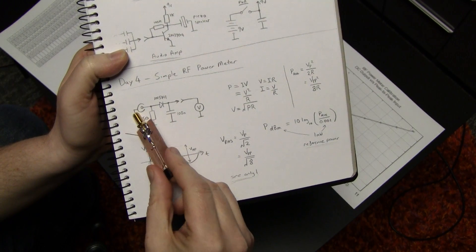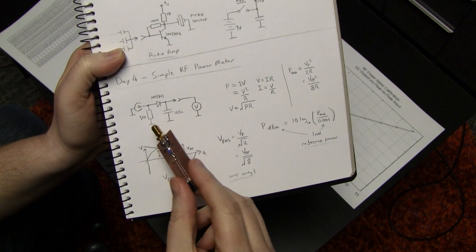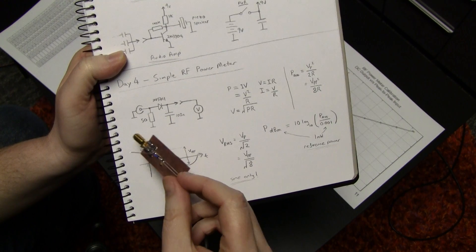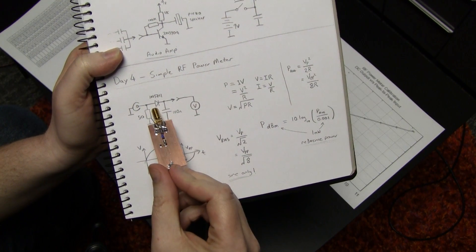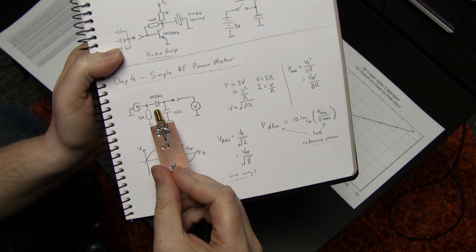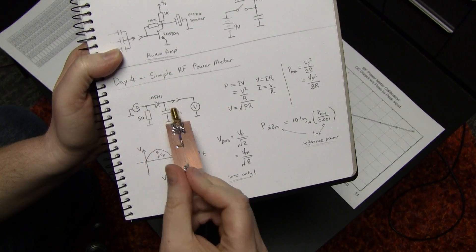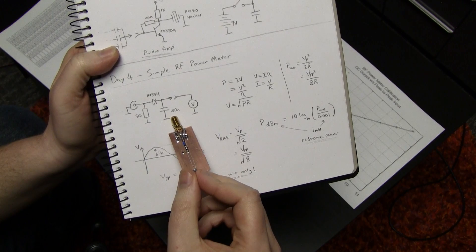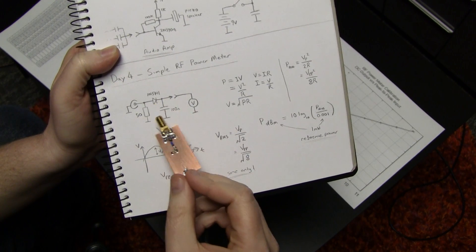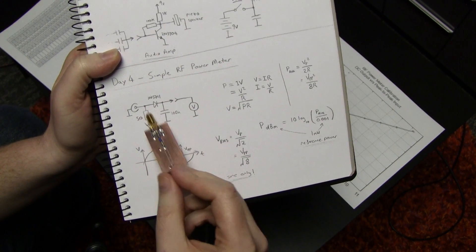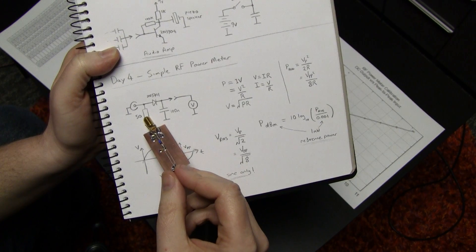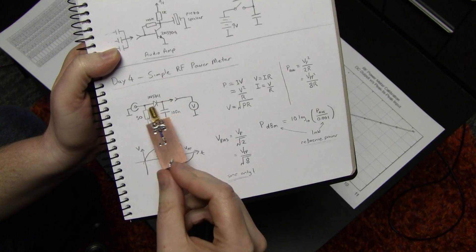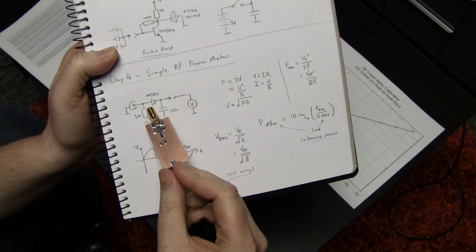RF comes in, it's terminated into this 50 ohm resistor, so it will develop a voltage across that 50 ohm resistor and we use a low-capacitance Schottky diode to pick off the peak voltage and charge up a capacitor. So we get some DC voltage across this capacitor, which is essentially the peak voltage of the RF waveform across this resistor minus the forward voltage drop of the diode.